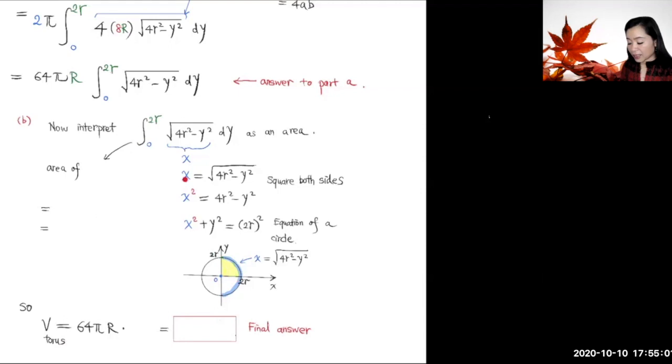This is an equation of a circle centered at the origin with radius 2r. This x = √(4r² - y²) corresponds to the right half of this circle. So this highlighted half circle. We're integrating this y from 0 to 2r, which corresponds to the area of this quarter of this whole circle.